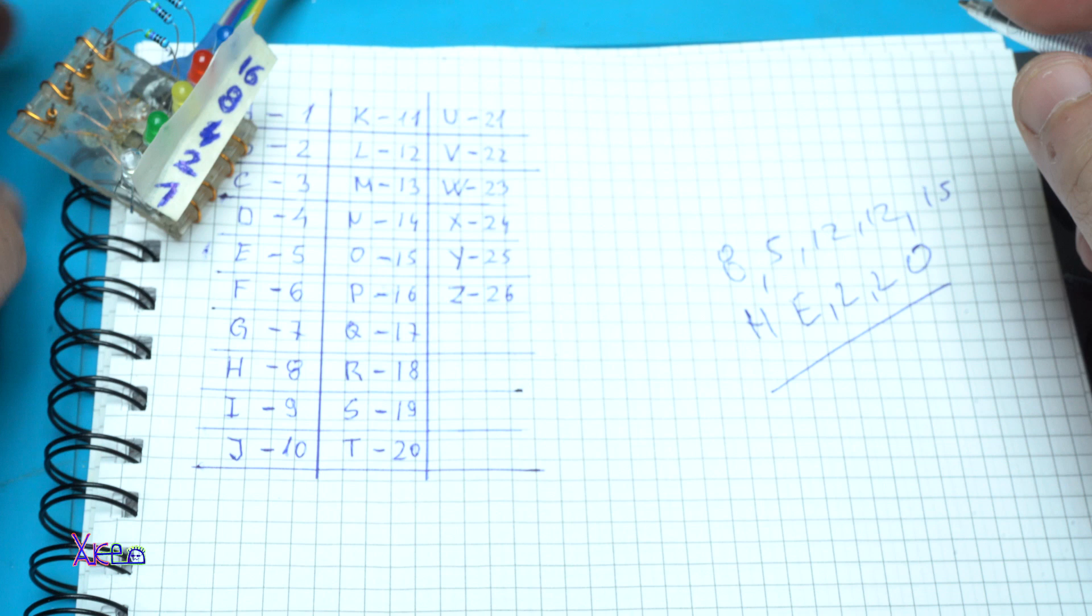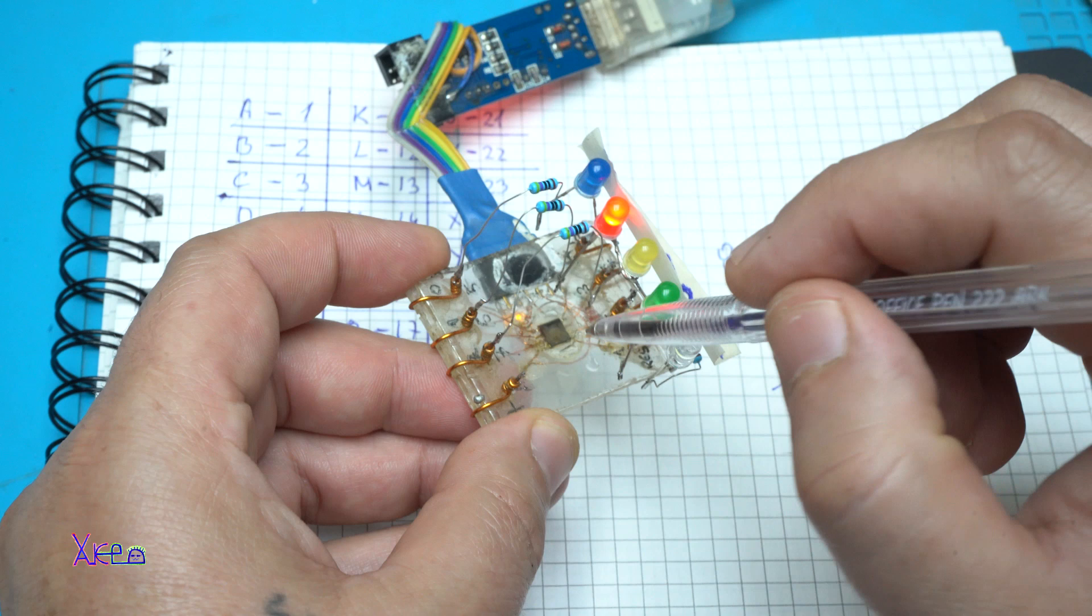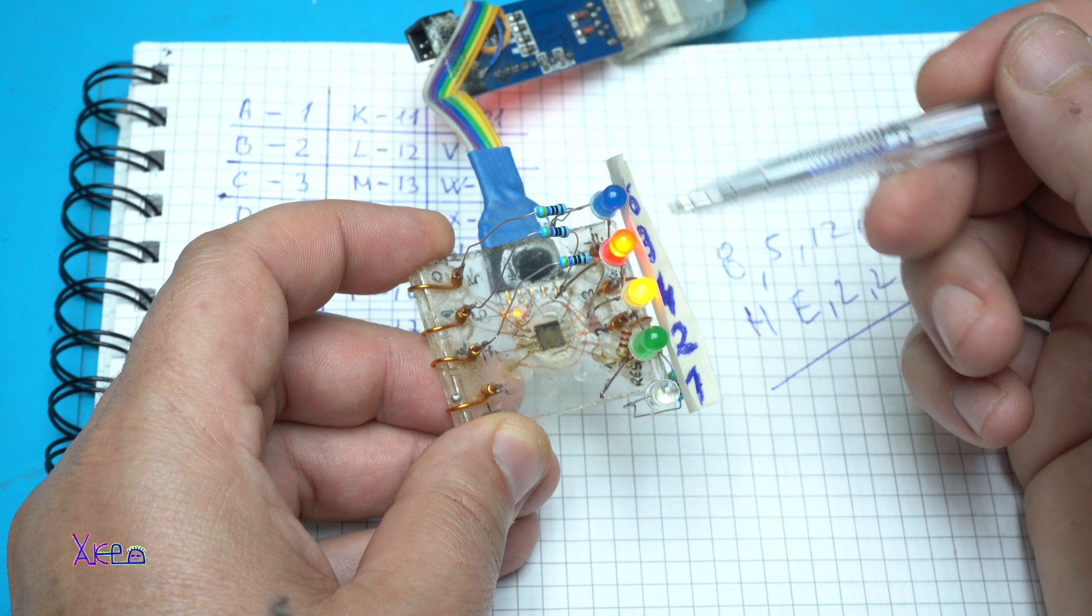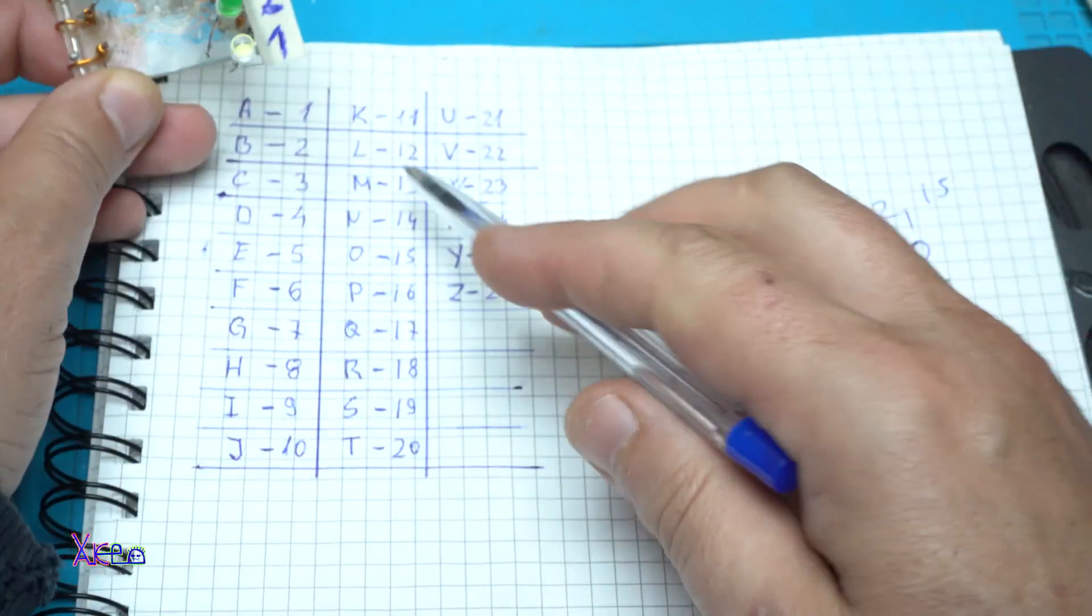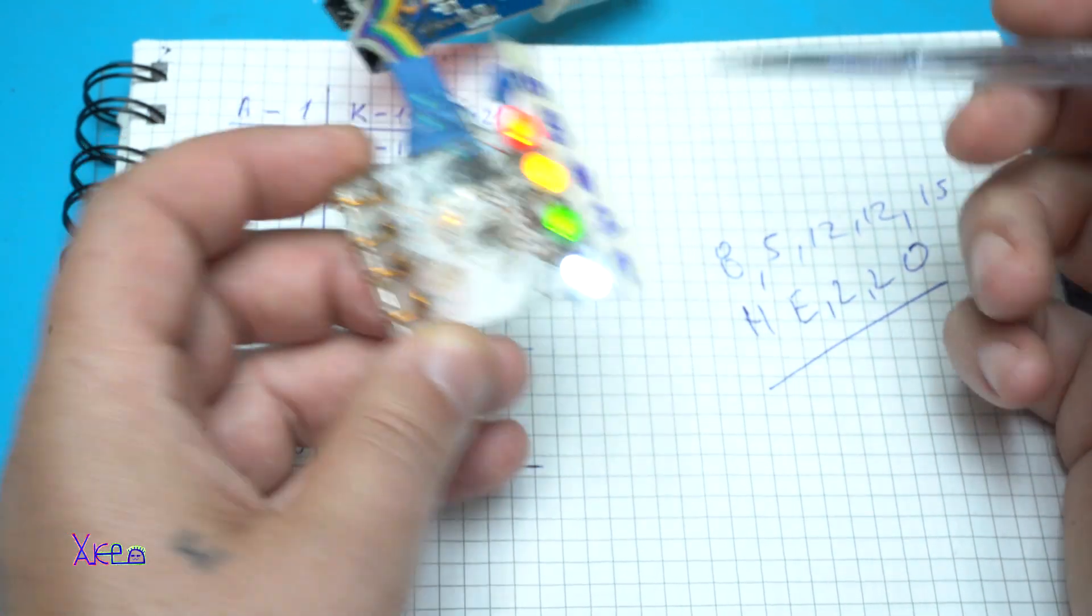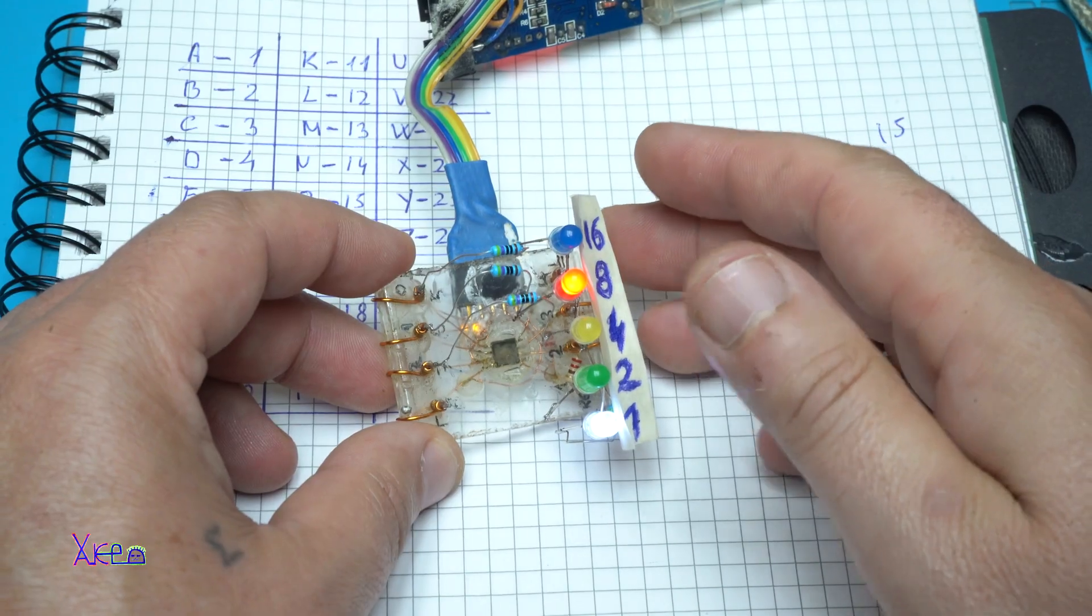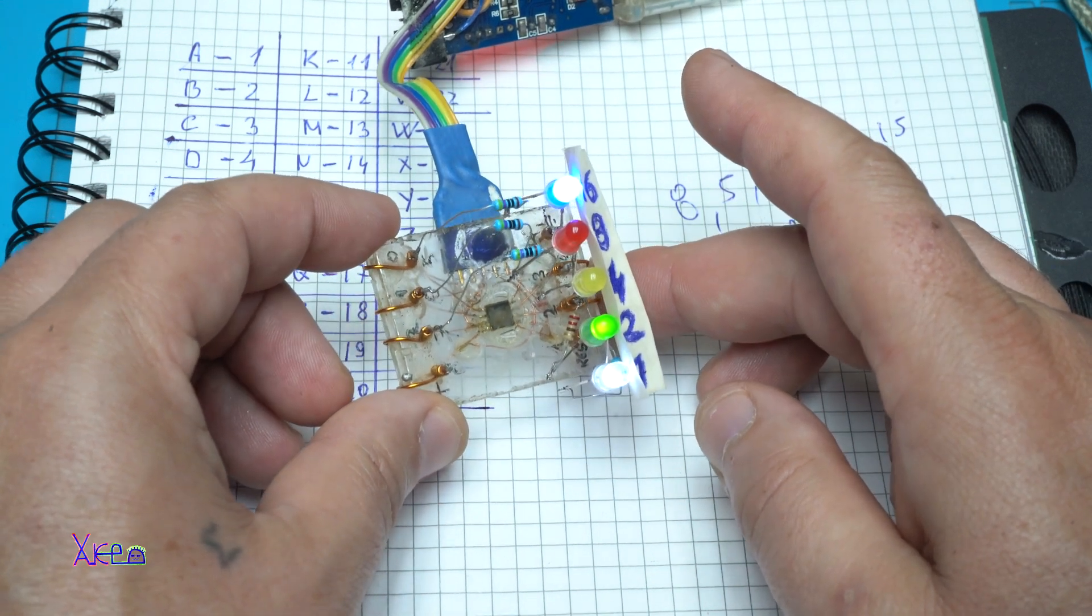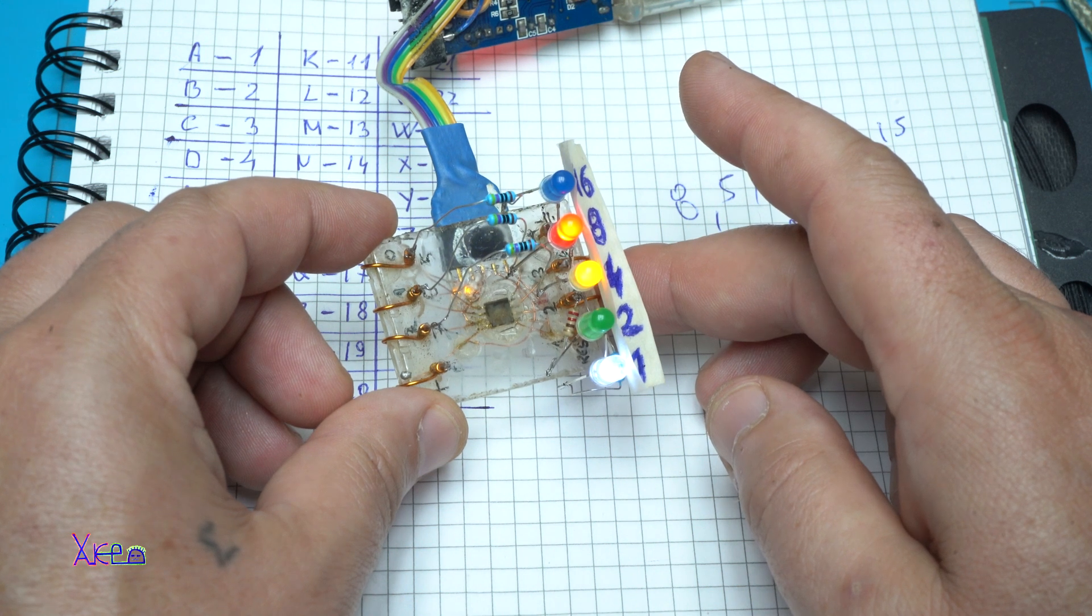This gadget using the code programmed in the microchip ATtiny85 can show messages in binary mode, and you need to decrypt it using this table or you can make your own. This is nice, so you get it. You can make your own gadget that will have a secret message encrypted in binary mode.